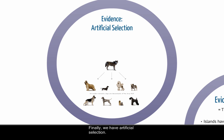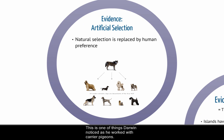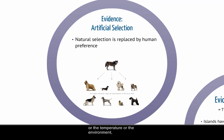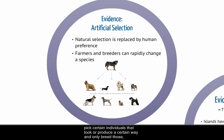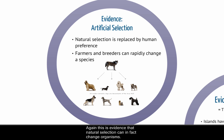Finally, we have artificial selection, which is one of the things Darwin noticed — he worked with carrier pigeons. This is essentially natural selection where the selective pressure is not predators or temperature, but human preference. Farmers and breeders have shown they can rapidly change a breed of dog or a form of corn through selective breeding — picking certain individuals that look or produce a certain way and only breeding those. This rapidly changes populations to look and act very differently, which is evidence that natural selection can in fact change organisms.